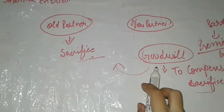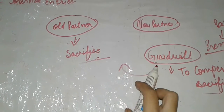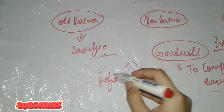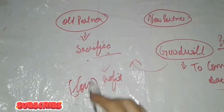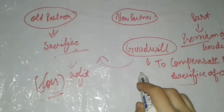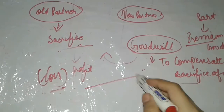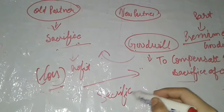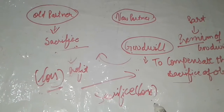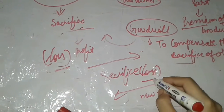When a new partner is admitted into the partnership, old partners sacrifice part of their profit share for the new partner. This sacrifice results in a loss for the old partners, so the new partner provides compensation for that sacrifice.